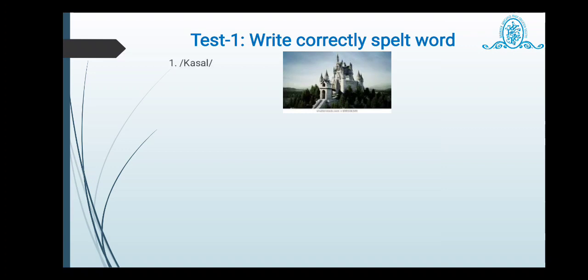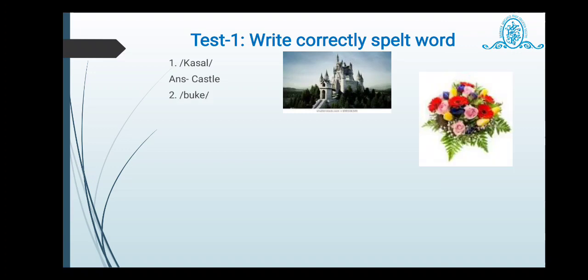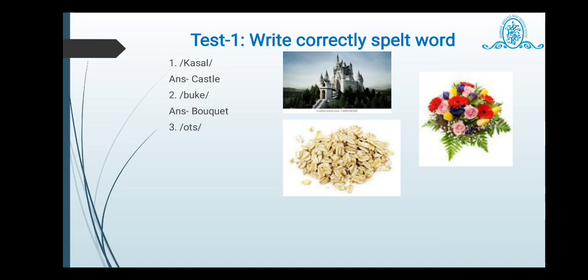So let us, we will see some of the words. You can have practice. Write correctly spelled word. This is a picture of what the pronunciation is given, that is castle. So what is the spelling of castle? Pay attention. That is castle, C-A-S-T-L-E. Next one is here. What is the picture? It is of bouquet. And pronunciation is already given into slanting bar. Bouquet. So what is the spelling of it? B-O-U-Q-U-E-T. Next one is here. Picture is of oats. How it is pronounced? Oats. But spelling is O-A-T-S. Next is here, weird. How we pronounce it as weird? But spelling is here, W-E-I-R-D.